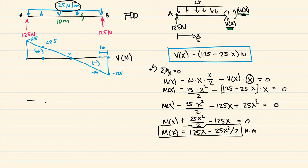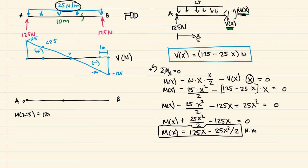Let's draw the moment diagram. Here is the beam with point A and point B. We plug in values of x to get the corresponding moment. At x = 0: m(0) = 125(0) minus 25(0)² over 2 = 0, so the moment at A is zero. At x = 5: m(5) = 125(5) minus 25(5)² over 2 = 312.5 newton-meters.